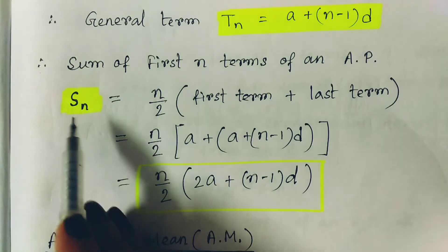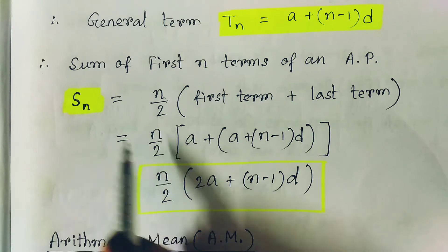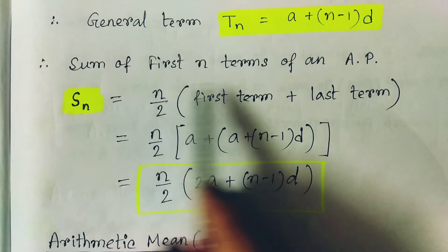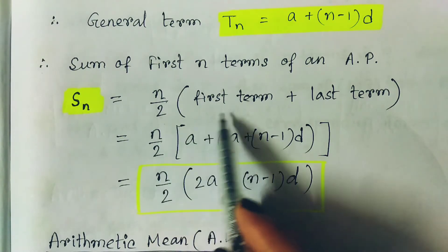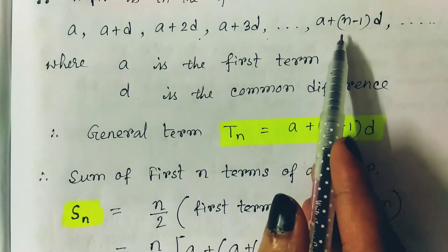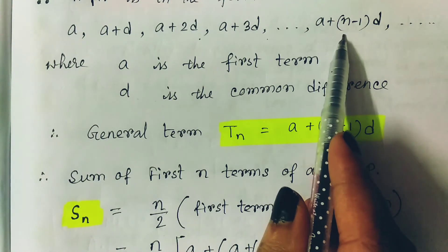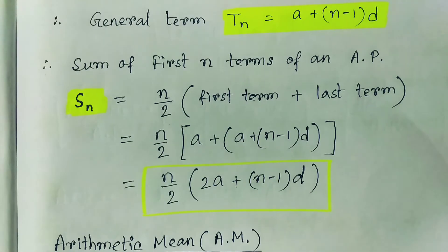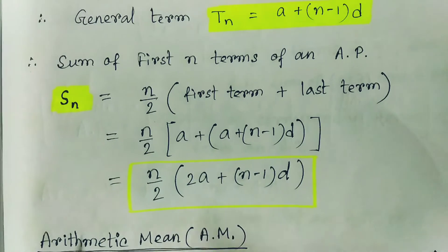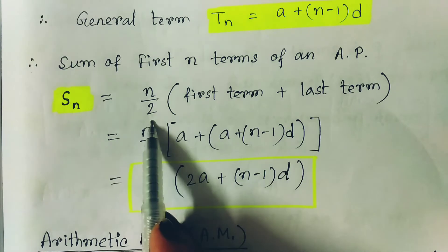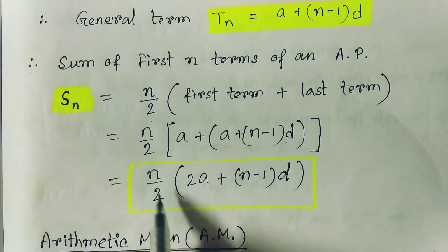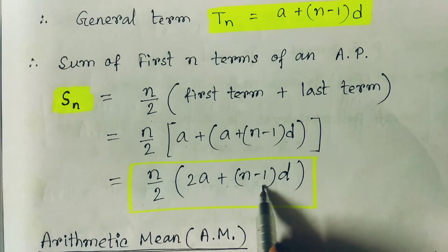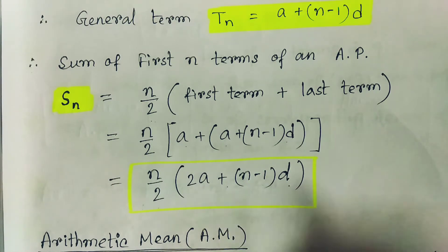The sum is denoted by Sn. If there are n terms in the AP, the sum is n divided by 2 times the first term plus the last term. The first term is a, and if there are n terms total, the last term is a plus (n minus 1)d. So Sn equals (first term plus last term) times n by 2, which gives n by 2 times (2a plus (n minus 1)d).